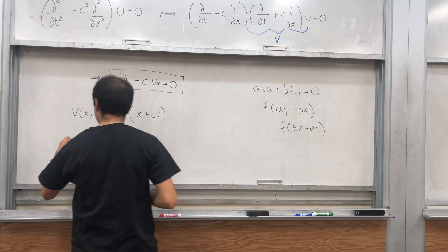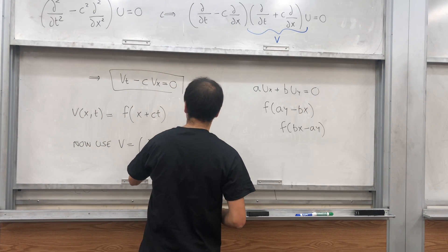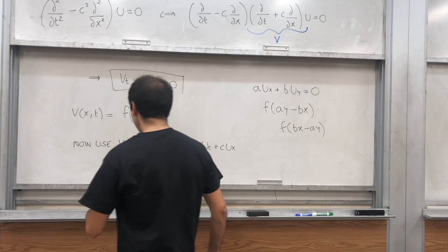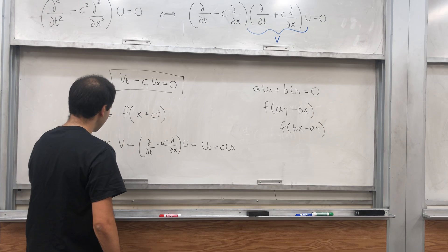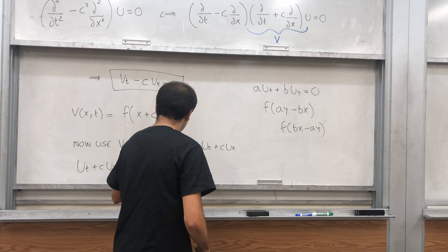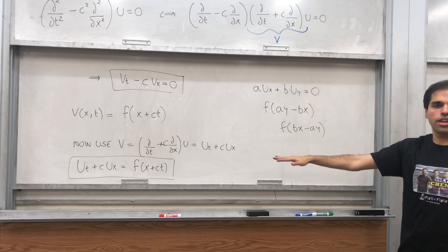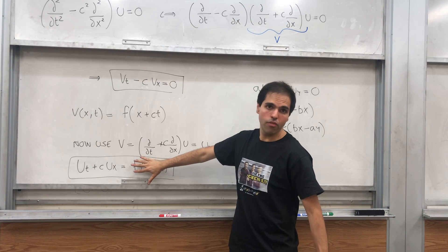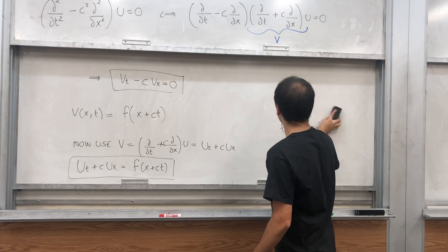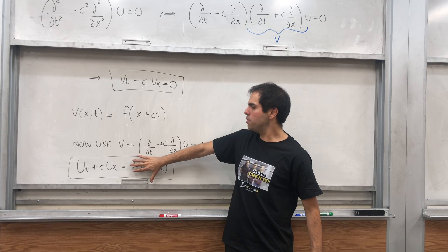And to solve for u, you just need the definition of v, which is this thing. So now let's use v. v is simply del over del t plus c del over del x u, which is u_t plus cu_x. So what we get is u_t plus cu_x equals v, but remember now v we know what v is. It's f of x plus ct. So all we need to do is now solve this first order inhomogeneous PDE.